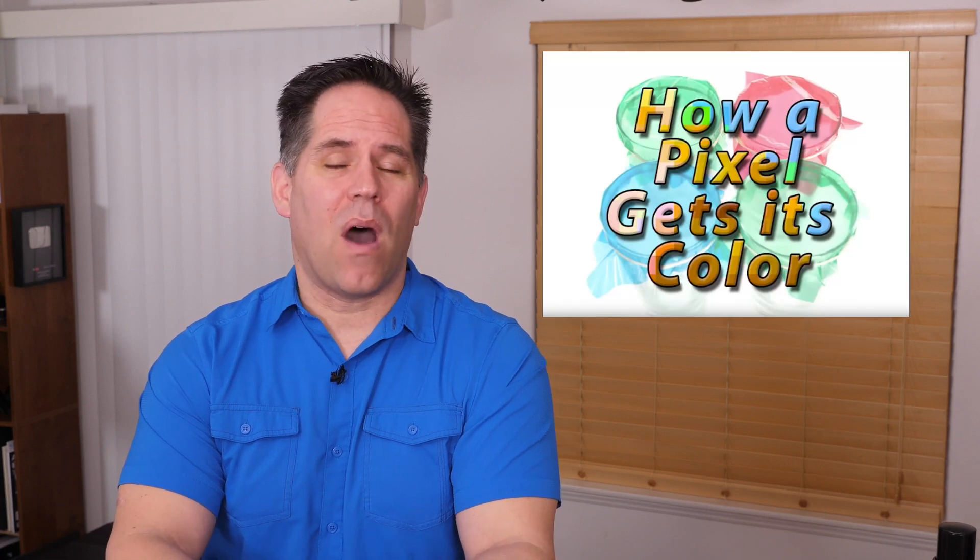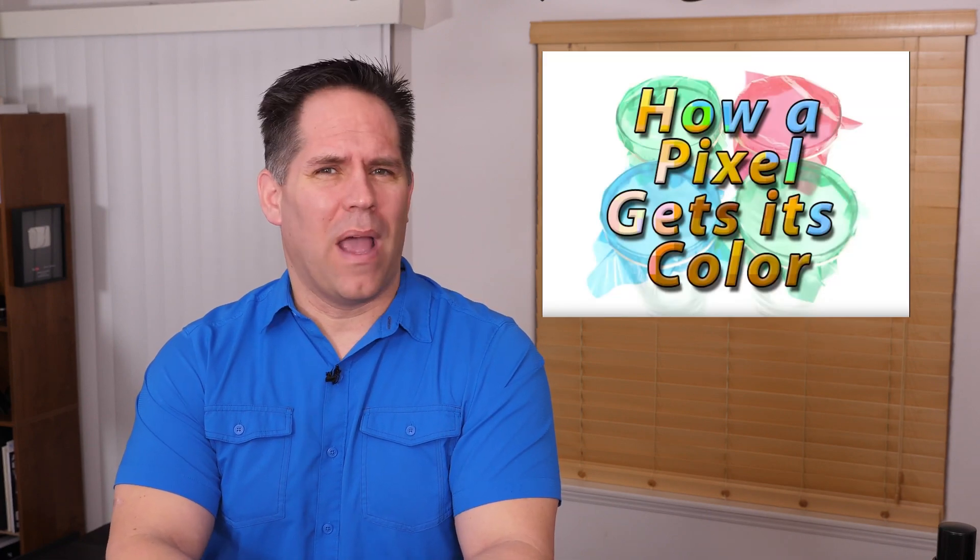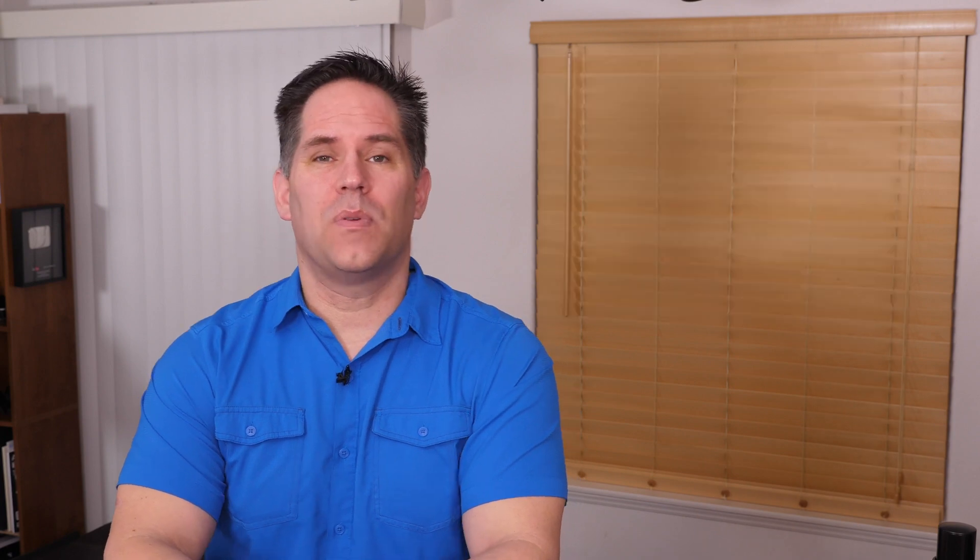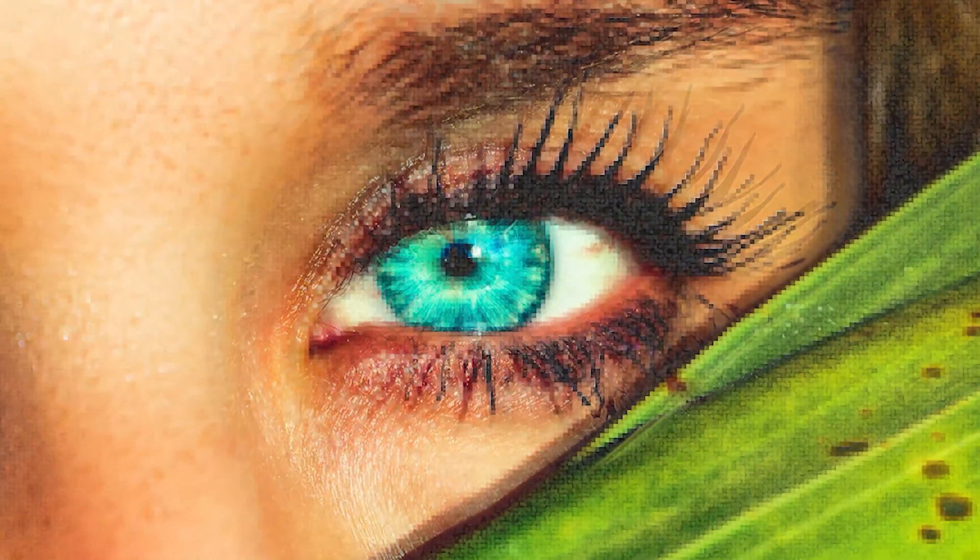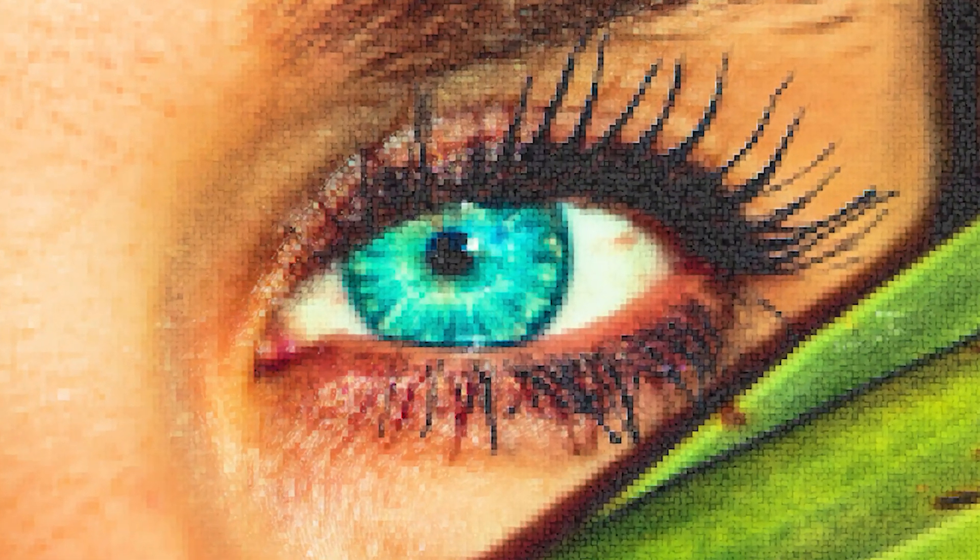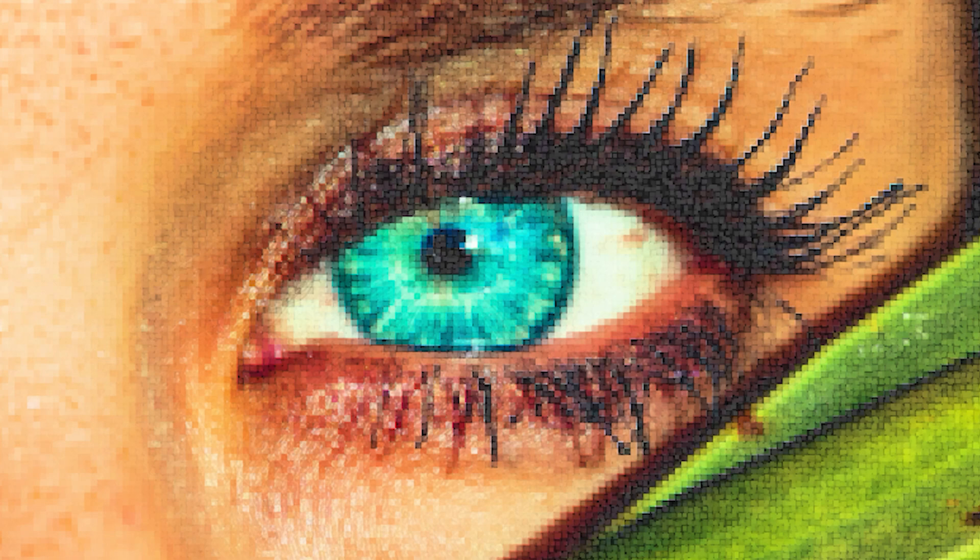Now if you haven't seen my video on interpolation, which is how a pixel gets its color, something you might want to check out. I'll put that link in the description. A modern digital photograph is really made up of millions of pixels, and those pixels were interpreted or translated from millions of points of light.